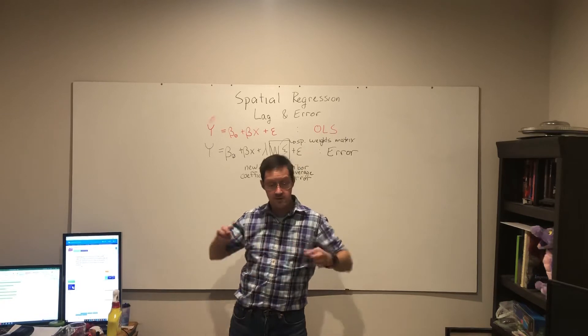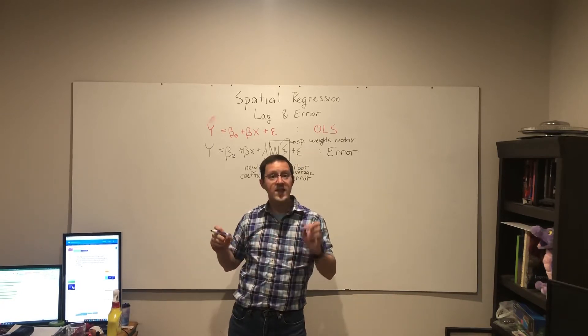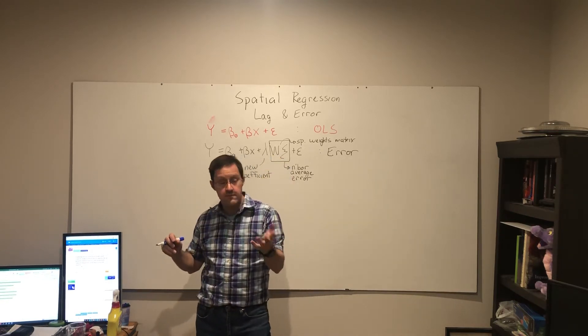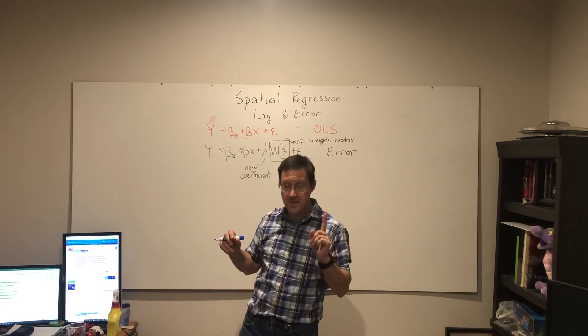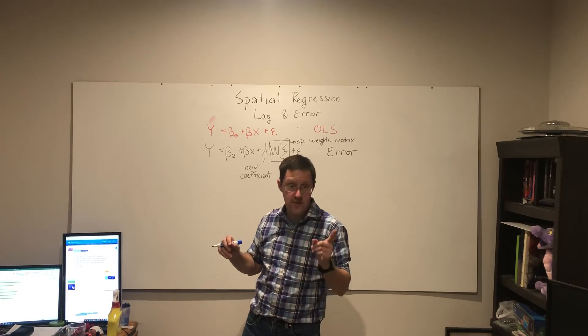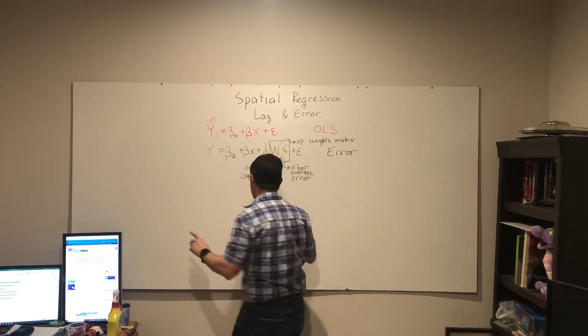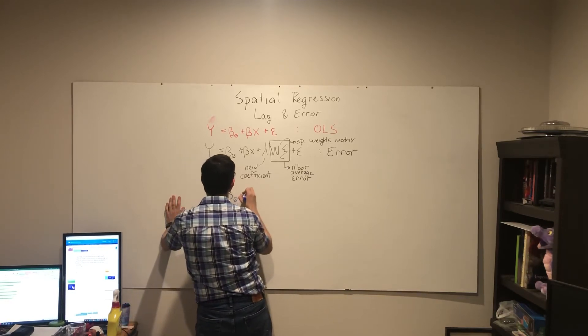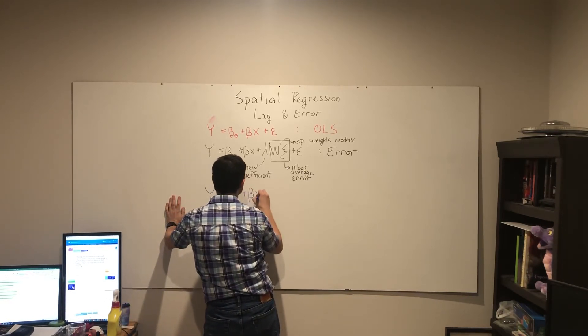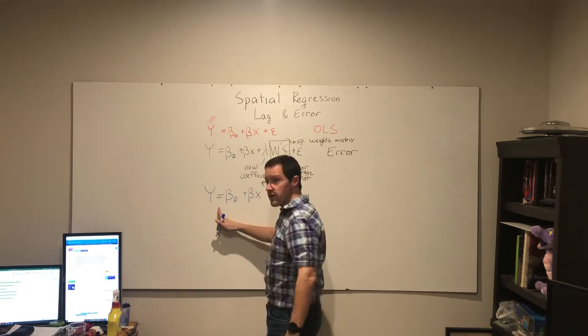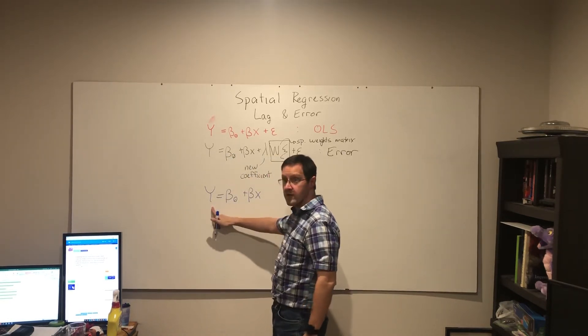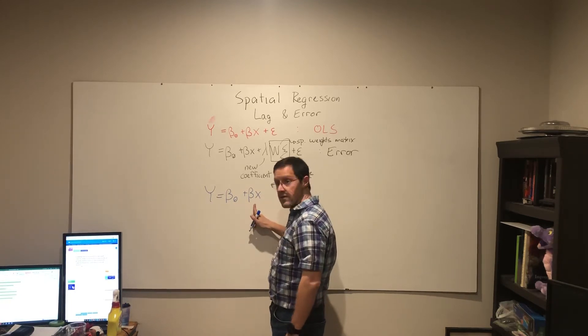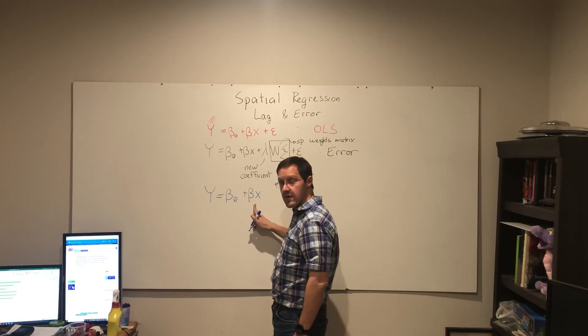Spatial lag does something very similar as you see, but the difference is actually quite important. It also starts out by saying our dependent variable is a function of the intercept plus the coefficient times our independent variable.